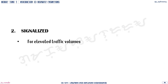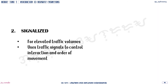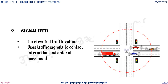The next type is signalized intersections, applicable for elevated or very large traffic volumes. It uses traffic signals to control the interaction and order of movement. Usually at an intersection there are two or more traffic signals. An example of a signalized intersection would be the intersection along Session Road.